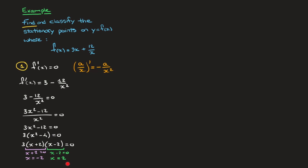Now that we have the x-coordinates of the stationary points, we need to calculate the corresponding y-coordinates. We plug each value back into the original function. Starting with x equals negative 2: f(−2) equals 3 times negative 2 plus 12 over negative 2, which is negative 6 minus 6, so f(−2) equals negative 12.